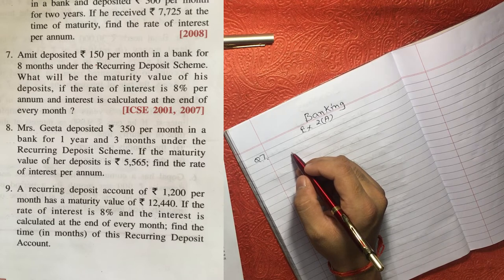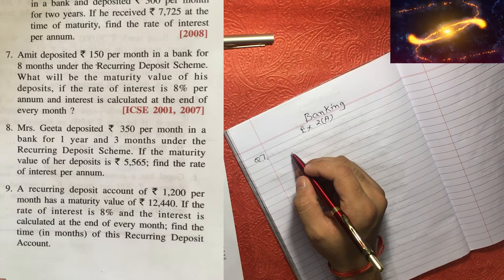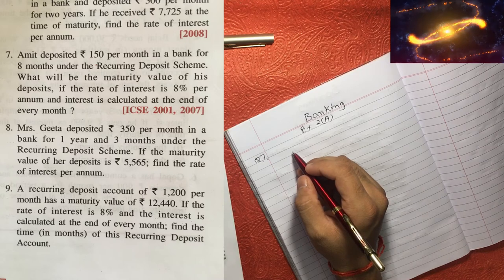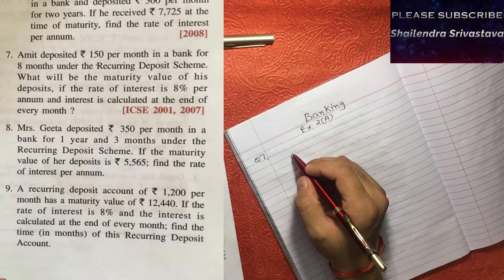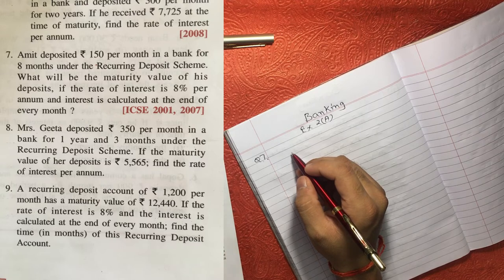The question is asking about the maturity value — whatever amount he has submitted for eight months, what will be the maturity amount? The rate of interest is given as 8% per annum and interest is calculated at the end of every month.